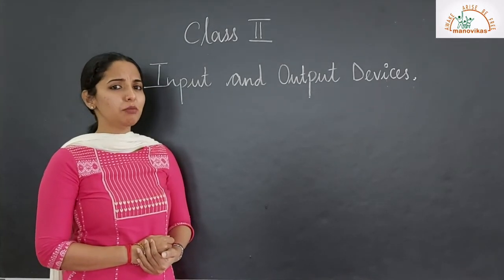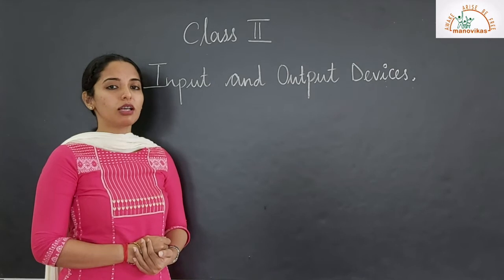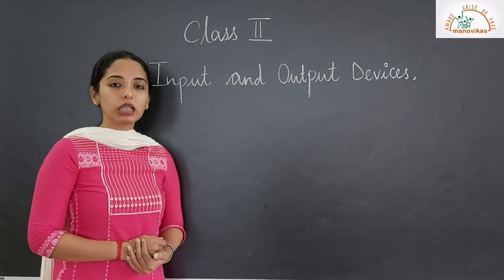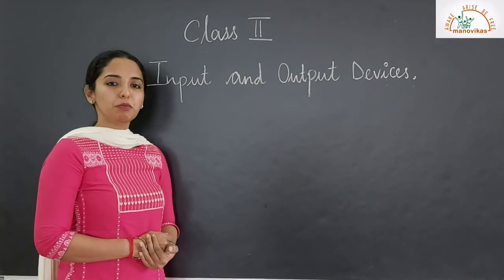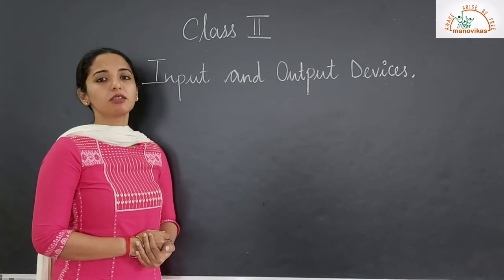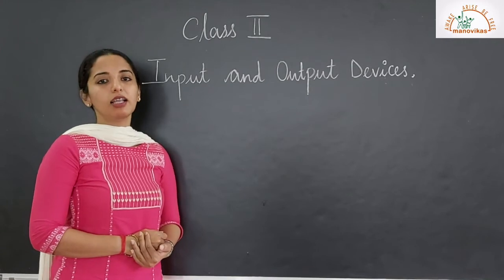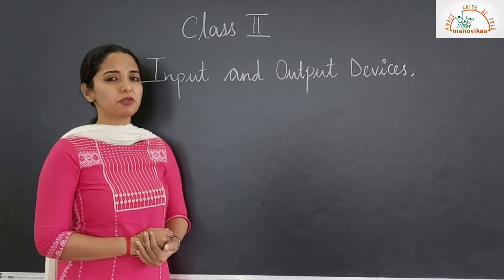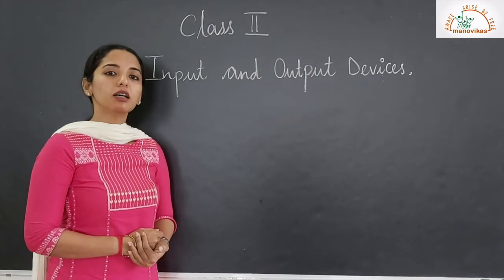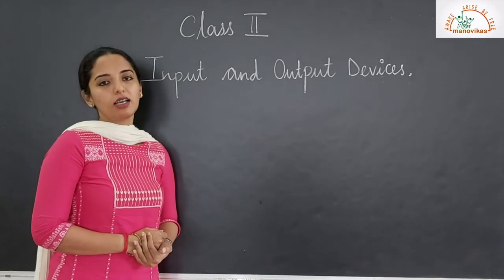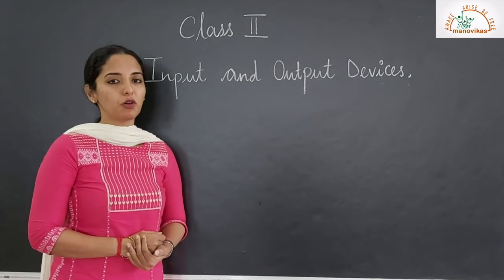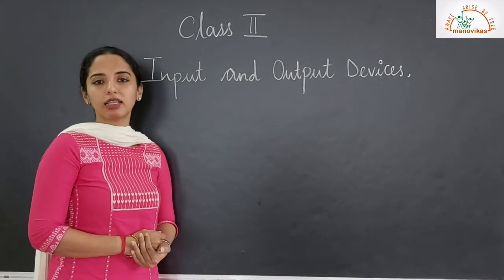Input devices are keyboard and mouse. And what is processing? Processing is working on the input data. The action that is taken on the input data is called processing. For example, addition, subtraction, multiplication — all these operations that you perform is processing. And who does the processing? The CPU, the brain of the computer, is responsible for doing the processing of the input data.